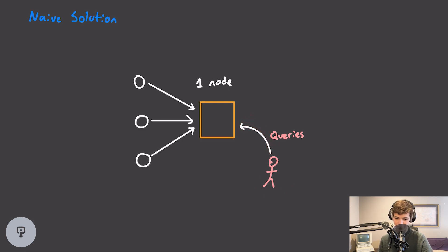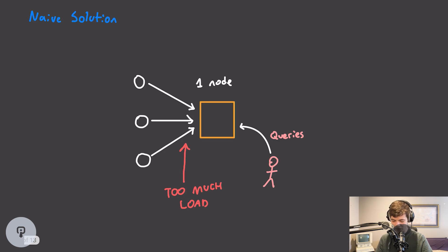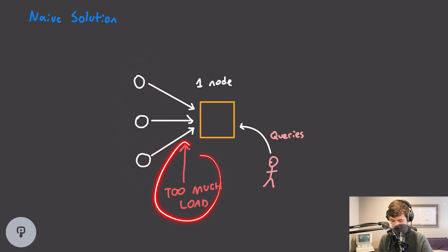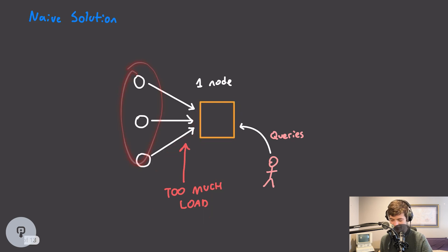This works perfectly fine for most small-scale logging systems. If we don't have a very large quantity of logs being ingested, this is perfectly fine. However, if we have a lot of load coming from our producing services, this could be too much load for this one node to handle, bogging down the server as well as potentially our services themselves. In order to scale to this extreme quantity of log ingestion, we need to distribute our logs onto multiple machines.